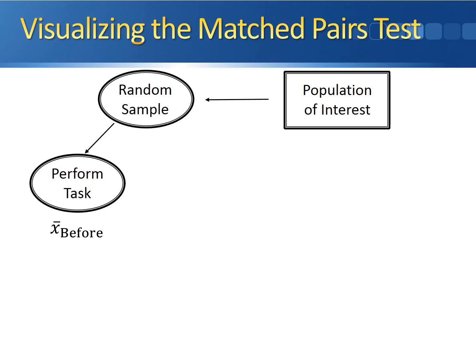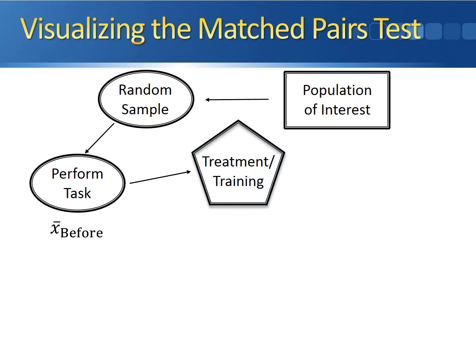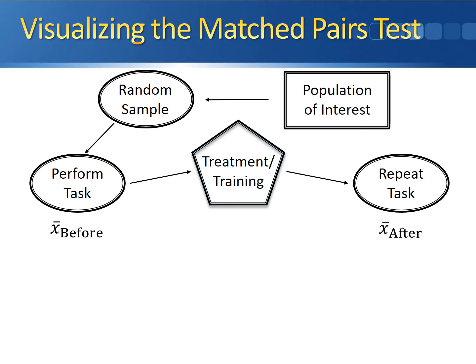Hold on to this sample mean. Next, each subject undergoes some type of treatment or training, and they then repeat the same task after the training session. We take a post-training measurement for all subjects and calculate that sample mean, X-bar after.